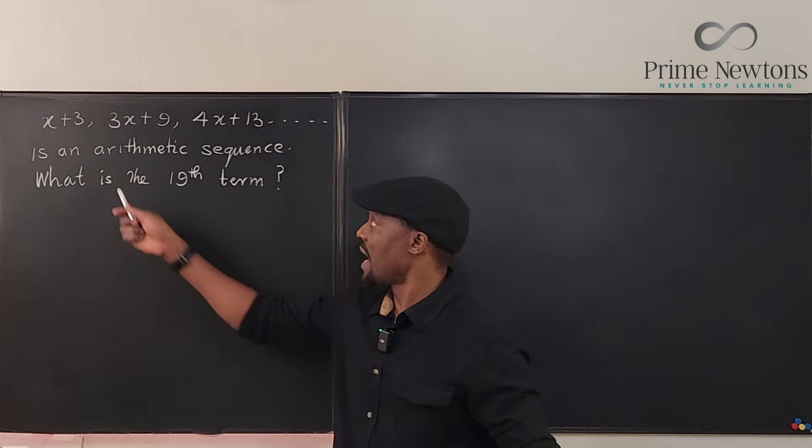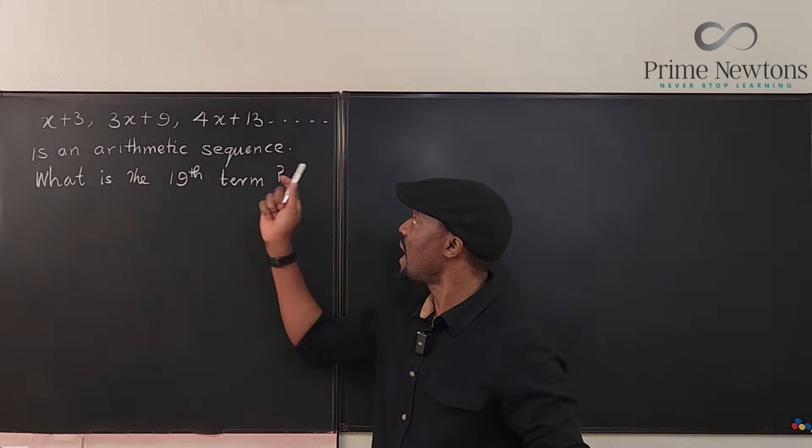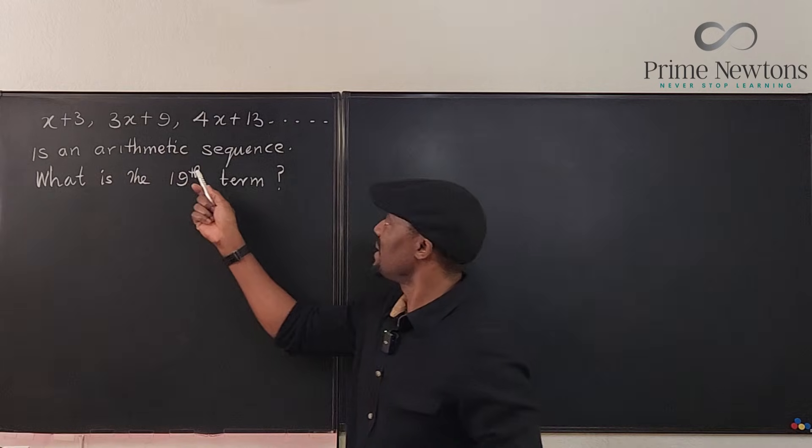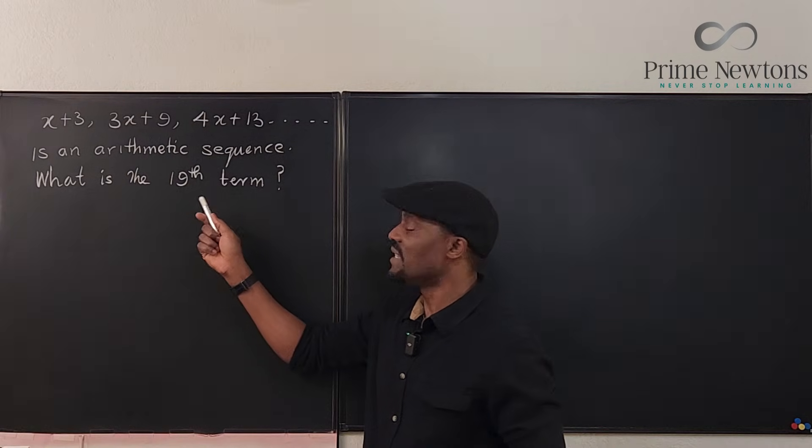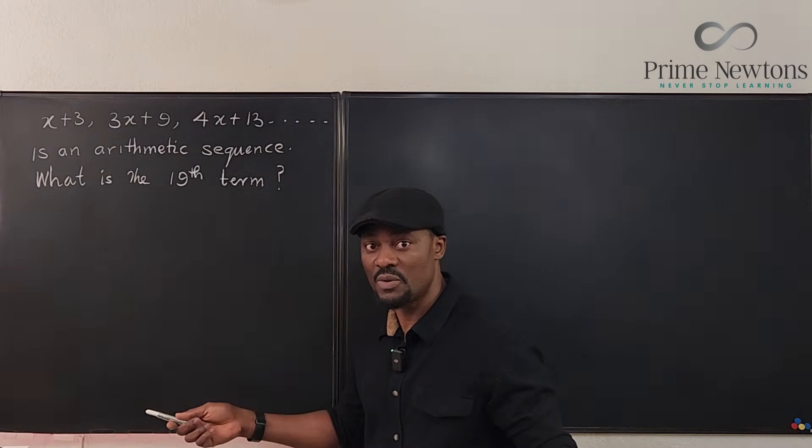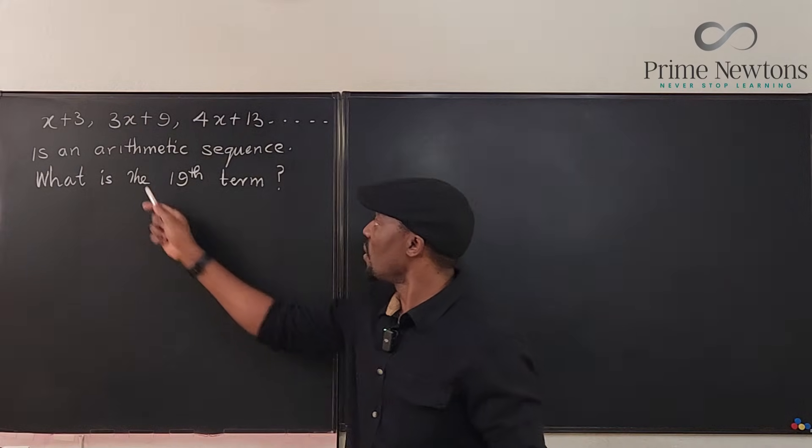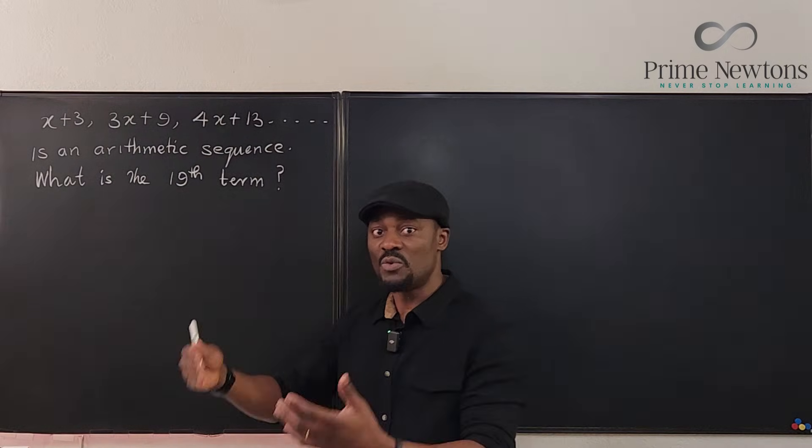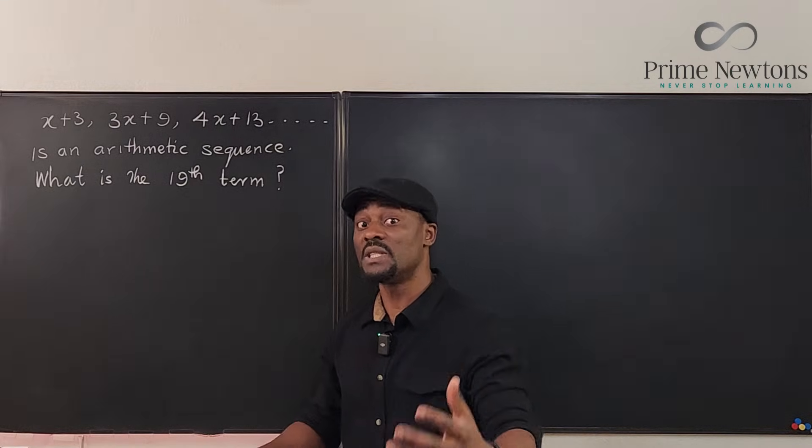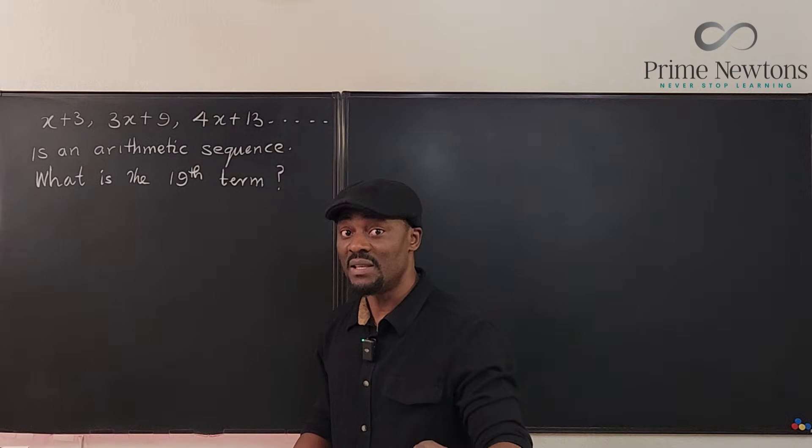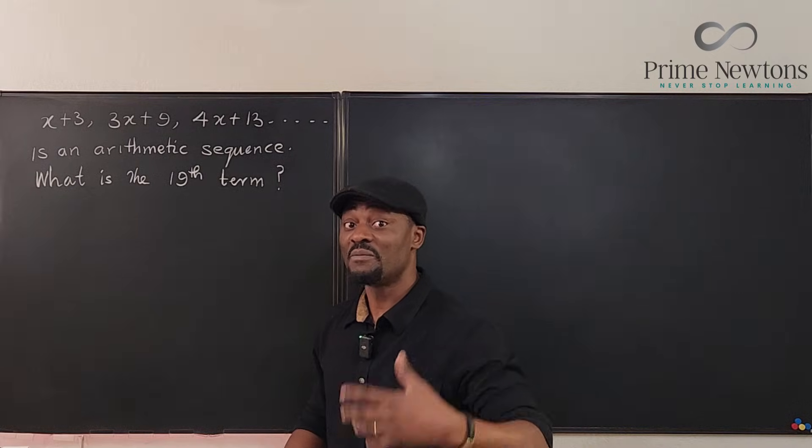So the problem says that x plus 3, 3x plus 9, and 4x plus 13 plus other terms is an arithmetic sequence. What is the 19th term of the sequence? I was expecting that everyone who saw arithmetic sequence would know that every arithmetic sequence has a common difference. That's the defining property of an AP or arithmetic progression.